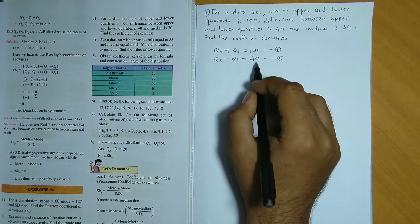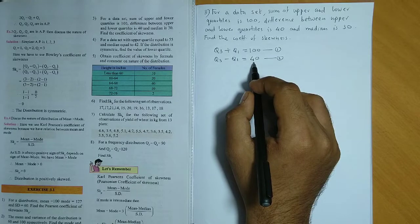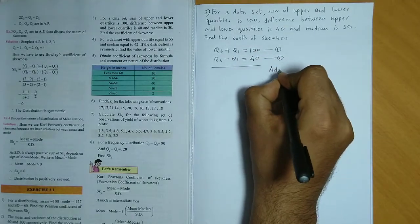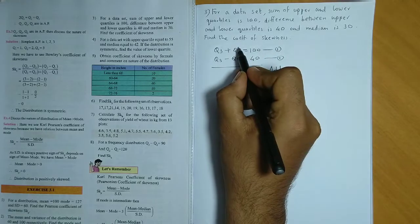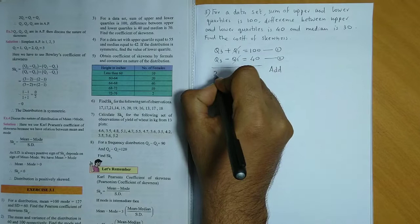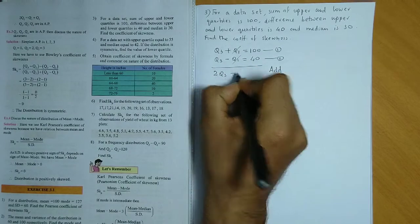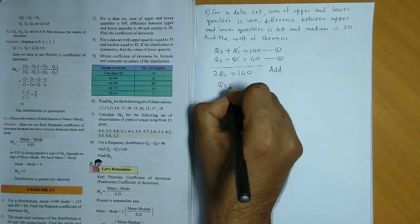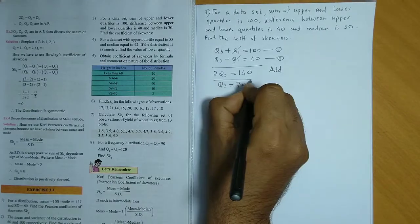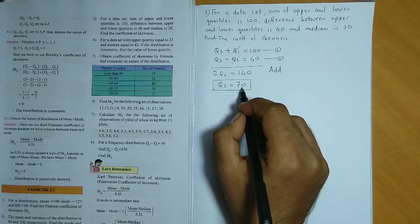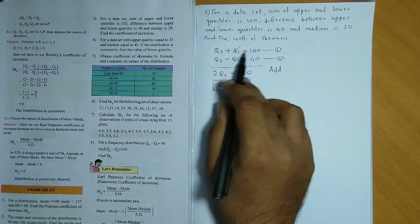Now we have two equations, we have Q1 and Q3. So if we add two equations, Q1 and minus Q1 cancel. So you have 2 times Q3 is equal to 140. So Q3 value is 70. Correct?